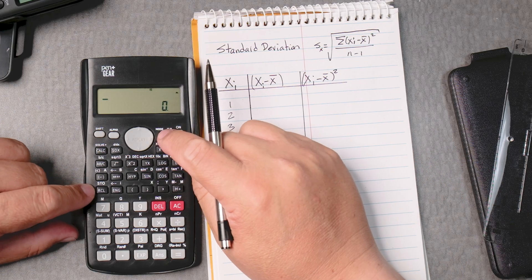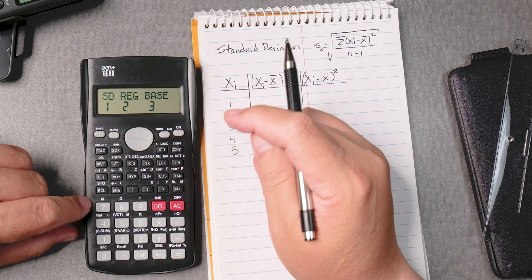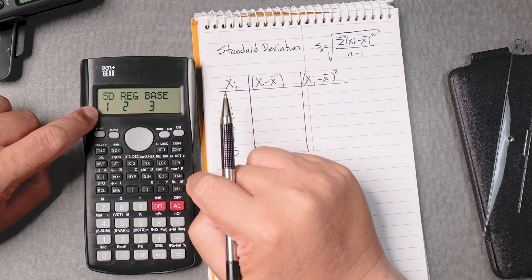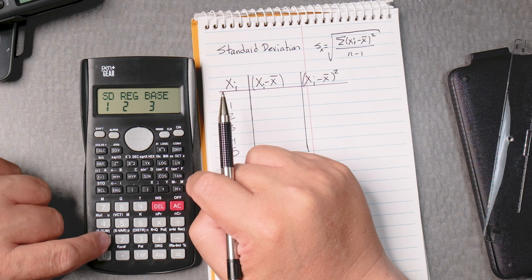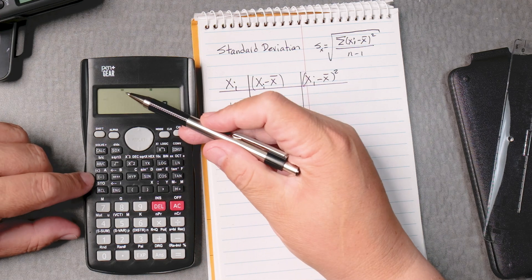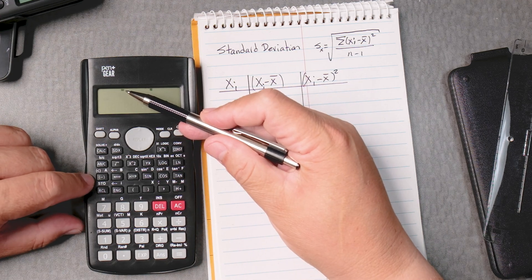First thing we need to do is press the mode button. We're going to press the mode button two times and then we're going to press SD, which is number one, which is the standard deviation menu. We're in the SD mode that we can see up here.